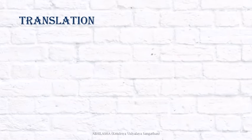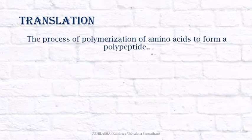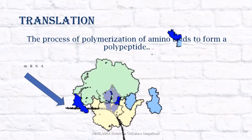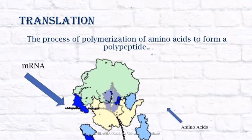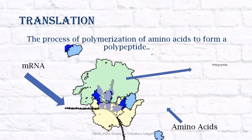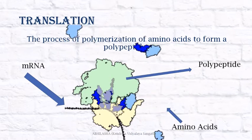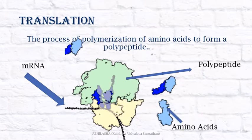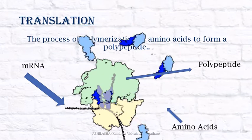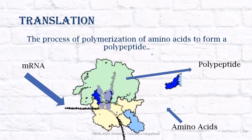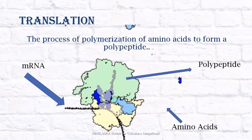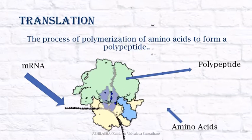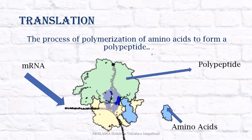Translation is the process of polymerization of amino acids to form a polypeptide. The sequence in which amino acids will be added is provided by the messenger RNA, which represents the DNA. Since the DNA does not itself come out into the cytoplasm, it sends its representative — the messenger RNA — with the code to form the proteins or polypeptides.